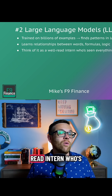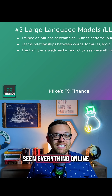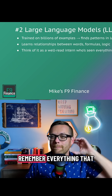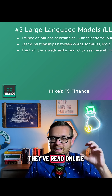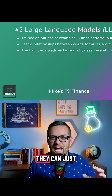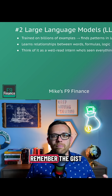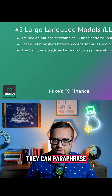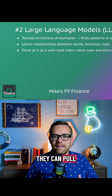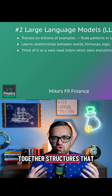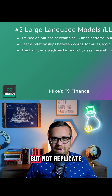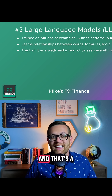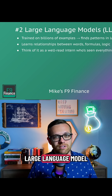Think of it like a well-read intern who's seen everything online, but can't remember everything they've read. They can just remember the gist. They can paraphrase. They can pull together structures that they've seen, but not replicate the content exactly — and that's a large language model.